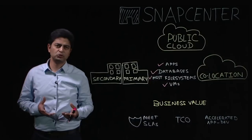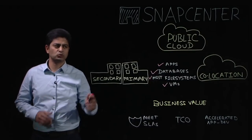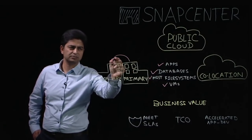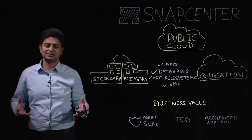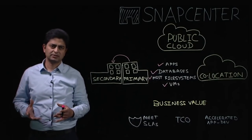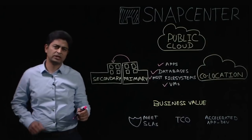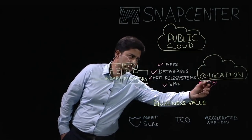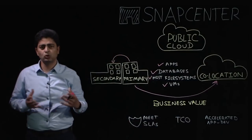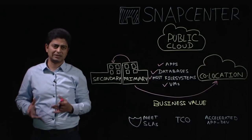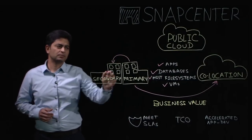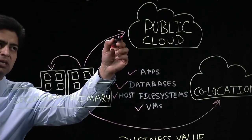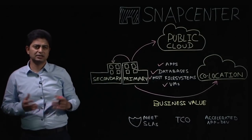Snap Center can help you protect these snapshots to a secondary on-tap storage system running in the same data center or a different data center. Or Snap Center can also help you back up your snapshots to a NetApp private storage system running in a co-located facility next to a public cloud, or back up your snapshots directly to on-tap cloud systems running in a public cloud.